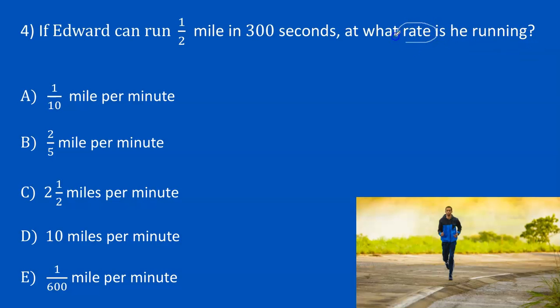So this word rate is our clue that we're finding a unit rate, and to find a unit rate we divide. Now to figure out the order of our division, in this example I would look at the answer choices. So the answer choices say mile per minute or miles per minute. So we know that miles goes in the numerator and minutes goes in the denominator.